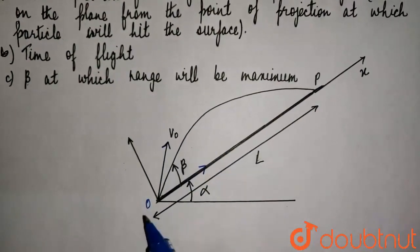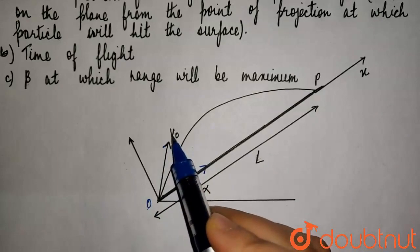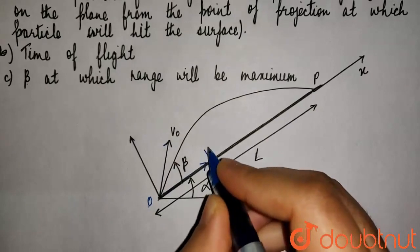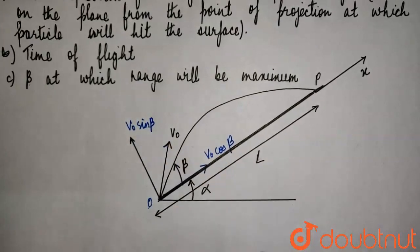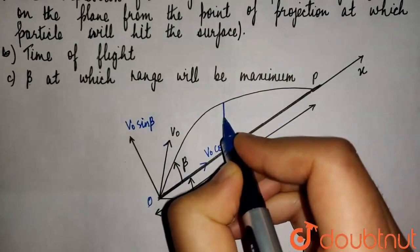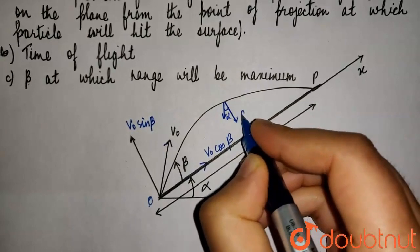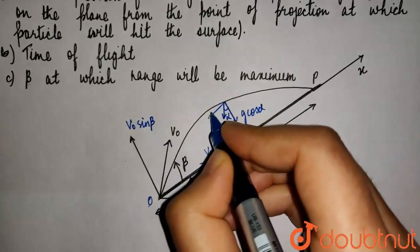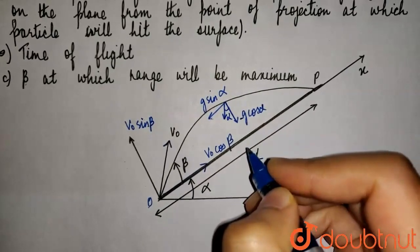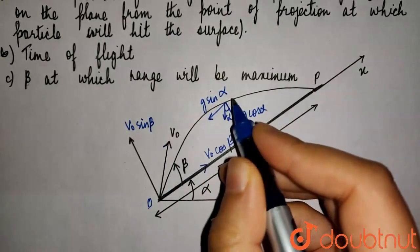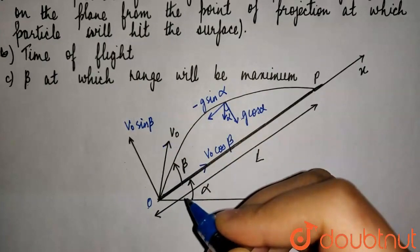So we have to calculate this distance OP at which the particle hits from the point of projection. Point O is the point of projection. Its initial velocity is V0, so it will have two components: one in the x-direction, V0 cos beta, and in the y-direction, V0 sin beta. Acceleration due to gravity acts downwards. Since this angle is alpha, gravity resolves to G cos alpha (taken as negative, downward) and G sin alpha (taken as negative, leftward).